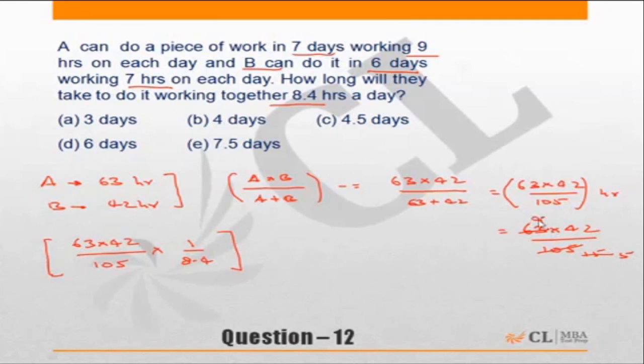As 7 into 15, so 7 into 9, 3×5 is 15, 3×3 is 9, which is equal to 42 into 3 is 126 upon 5, which is equal to 252 upon 10, which is equal to 25.2 hours.